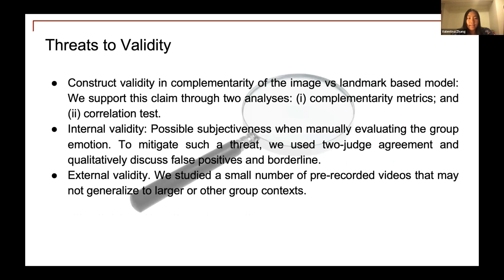Here is a summary of the threats to validity of our research and what we've done to mitigate them. For construct validity and the complementarity metrics of the image-first landmark-based model, we support our claim through the complementarity metrics and correlation tests. For internal validity, there may be subjectiveness when manually evaluating the emotions experienced in the test examples. To mitigate this, we used two-judge agreement and qualitatively discussed false positives and borderline cases. For external validity, we studied a small number of pre-recorded videos that may not generalize to larger or other group contexts, which we will look into in future work.